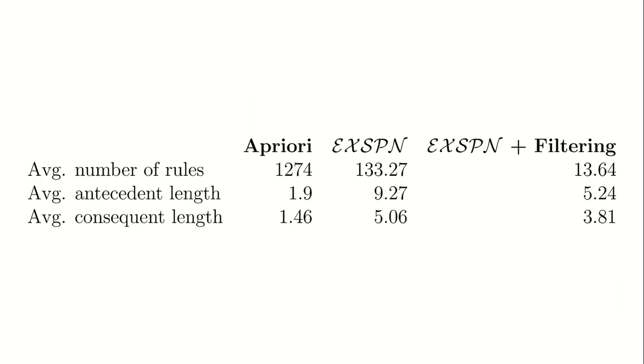We compare the CSI rules extracted by XSPN with association rules mined using the a priori algorithm. While the CSI rules are longer than the association rules, the set of CSI rules is much smaller. These CSI rules can be further compressed by filtering on precision, recall, and the number of data points to obtain a smaller set of rules.